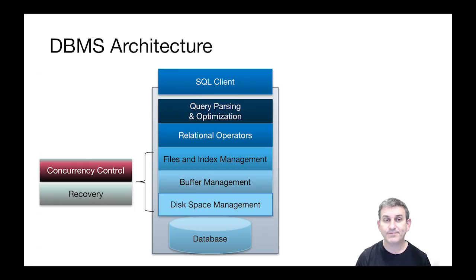Remember our picture of a database management system architecture — this is more or less a relational database management system architecture, going up from SQL at the bottom. On the left we have transactional semantics for concurrency and recovery, which we'll learn about later in this class. So all of that is very traditionally what's offered by relational database systems.